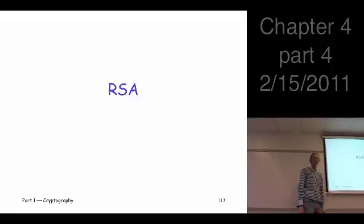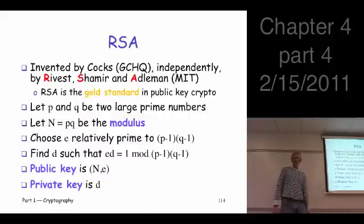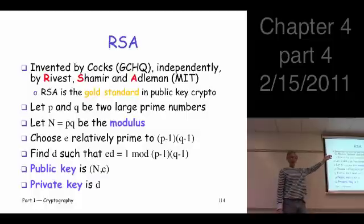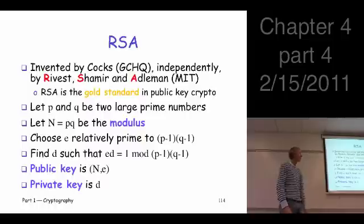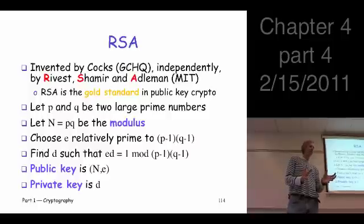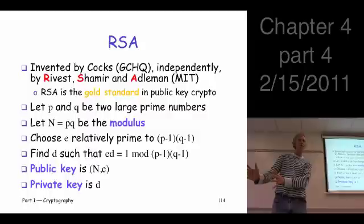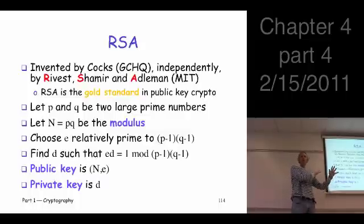RSA is the big one for encryption and decryption with public key systems. It was invented by Cliff Cox at GCHQ, and then reinvented completely independently a few years later by Rivest, Shamir, and Adleman at MIT. RSA is the gold standard and is the most widely used for encryption and decryption — probably used more than all other public key systems combined.